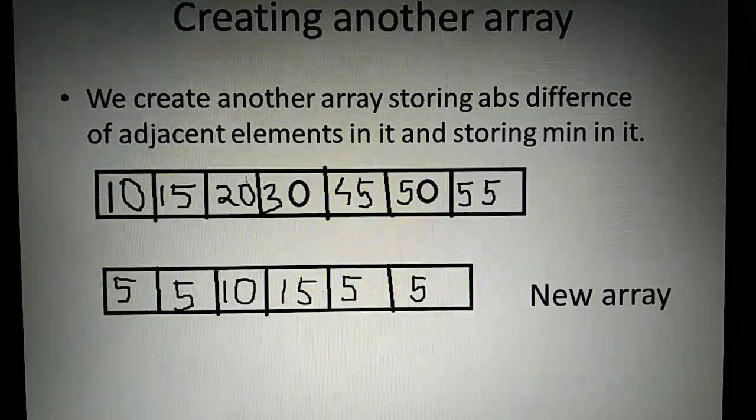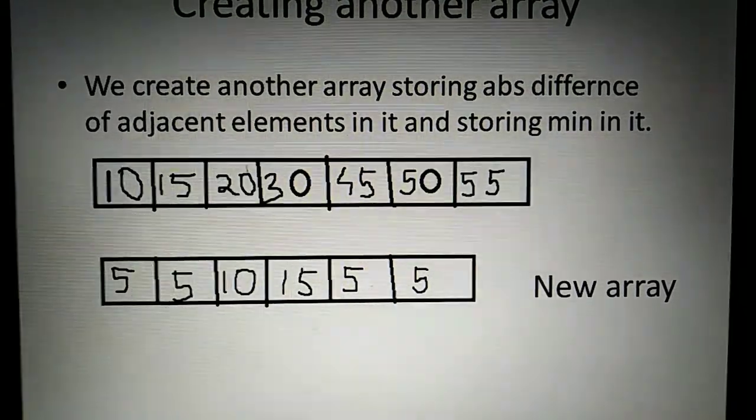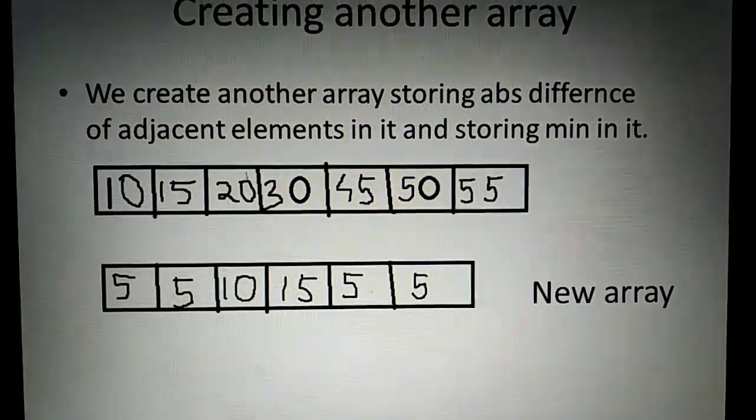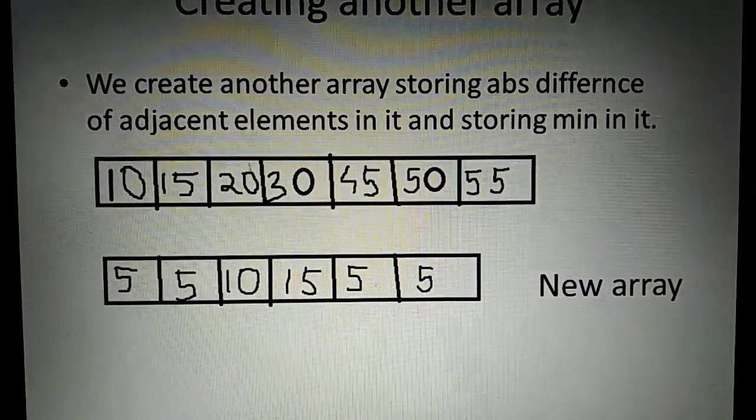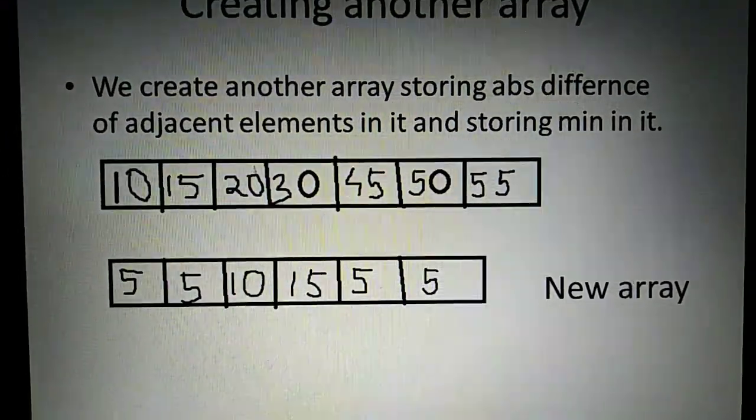Now you can see we have stored the minimum absolute difference. 15 minus 10 equals 5, then 20 minus 15 which is 5, 30 minus 20, and so on.